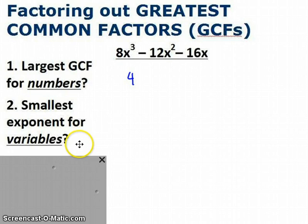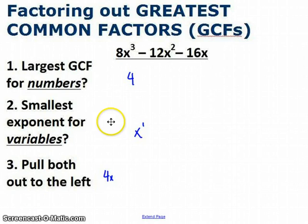Similarly with the variables, and this is the second step. You look at the fact that all of them, all the terms have x. So then you look for what's the smallest exponent among those variables. Well there's 3, there's 2, there's 1. So you can pull out x to the first. And what you do is pull both of those over to the left. So now I've got the 4 and the x off to the left. By factoring those out, what I'm left with is 2x² - 3x - 4.